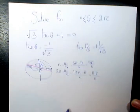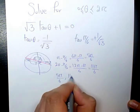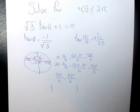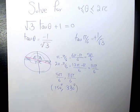So the two answers are 5π/6 and 11π/6. If you want to write in terms of degrees, it's going to be 150° and this one will be 330°.